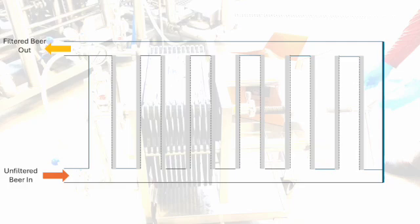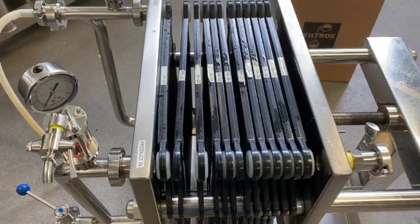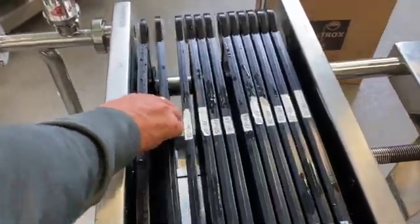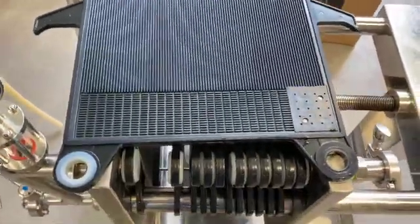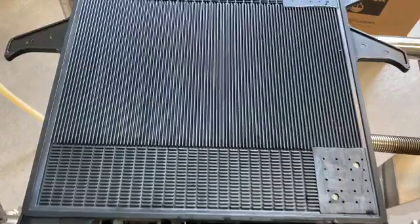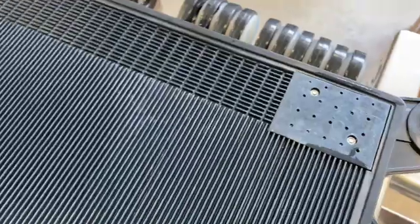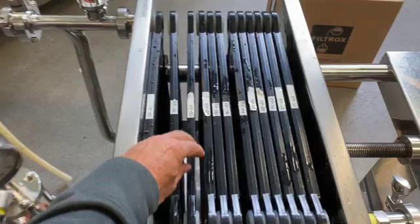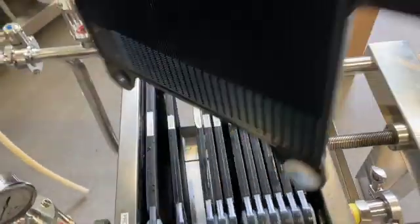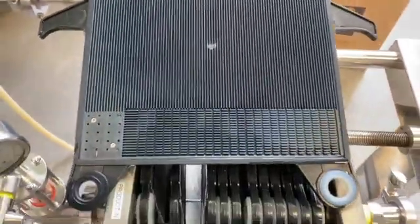To better understand how the sheet filter works, it is important to make a distinction between inflow and outflow plates. Even though all filter plates are identical with the exception of two end plates, they are recognized as either inflow or outflow plates based on their orientation within the filter. Each filter plate has four ears located at the corners of the plates. Two of those ears have gaskets and the other two are without gaskets. If the plate's ear without the gasket is positioned on the inflow side of the filter, that plate is then classified as an inflow plate.